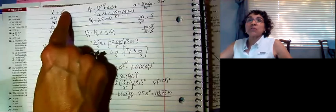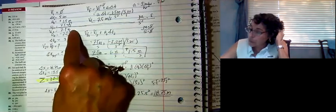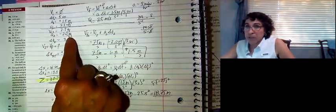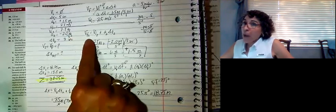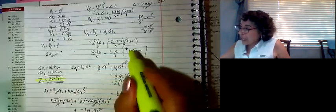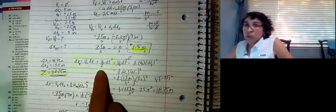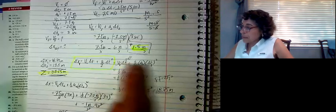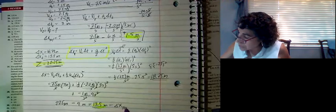Quick review: first we translated the problem, writing down V initial and the two acceleration phases. We used V final equals V initial plus A·Δt to find the velocity at the end of five seconds — 7.5 meters per second — which became the initial velocity for part two. With deceleration of 2.0 meters per second squared for three seconds, final velocity is 1.5 meters per second. Then we used Δx equals V·Δt plus one-half·A·Δt² for each part to find total displacement.